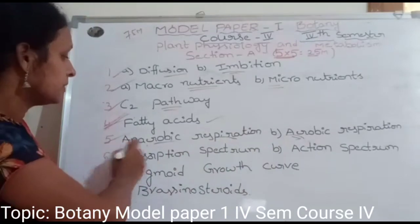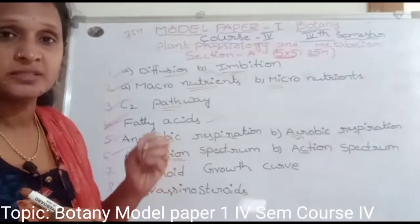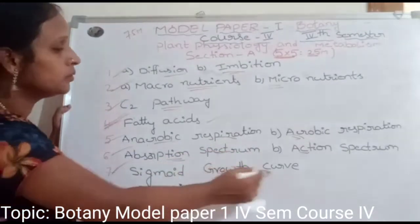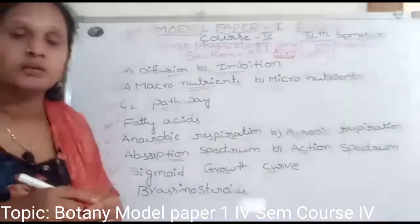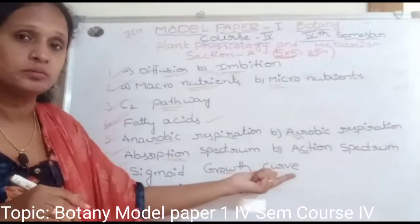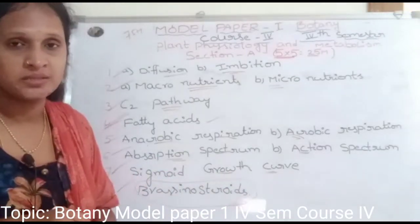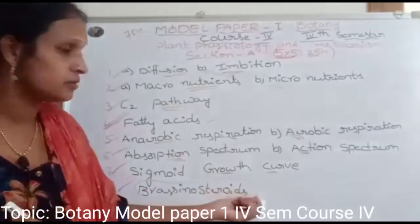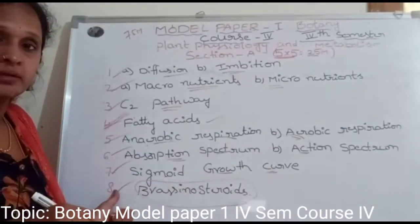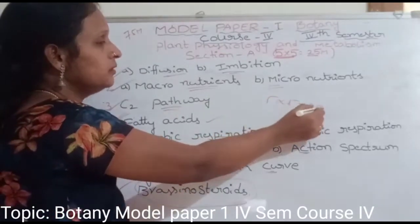Next: Absorption spectrum and action spectrum in photosynthesis — explained. Next: Sigmoid growth curve — you can find and explain the sigmoid growth curve. Then Brassinosteroids and plant growth hormones are discussed. This completes the 8 questions in Section A, each 5 marks, total 25 marks.